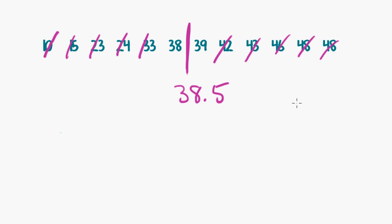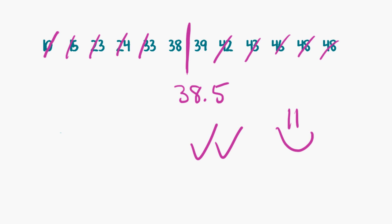I happen to think that the crossing-off method is a little bit faster, which is a good thing — because in an exam, particularly in exam 1 which is multiple choice, you don't get any marks for showing how you worked something out. So if you did it a quick way and still got the answer right, great! Whatever method works for you though — if the other one makes more sense, then go for it. Use that method.